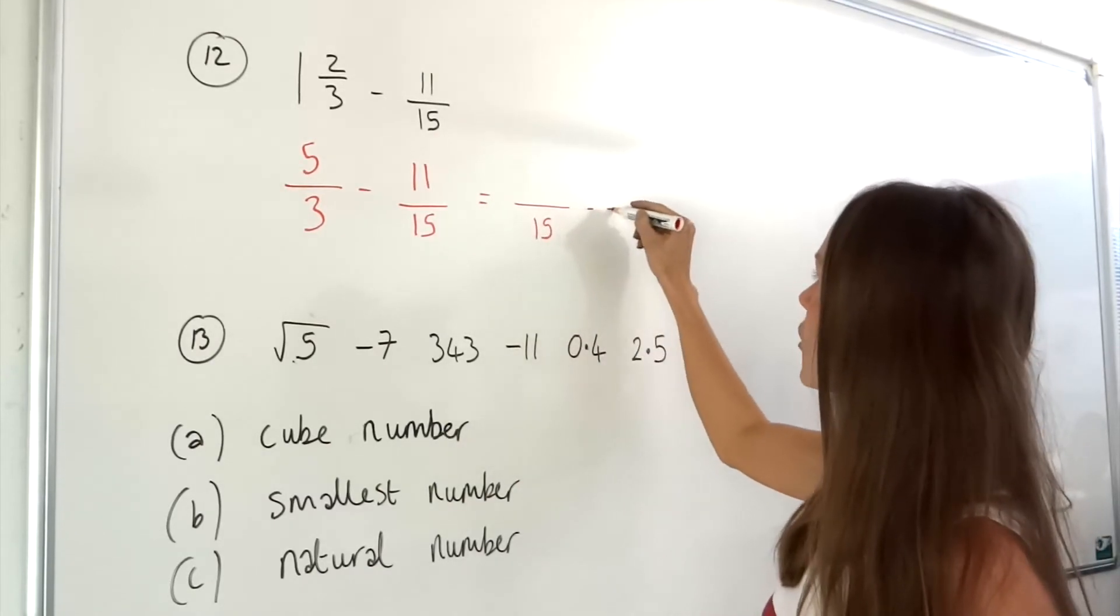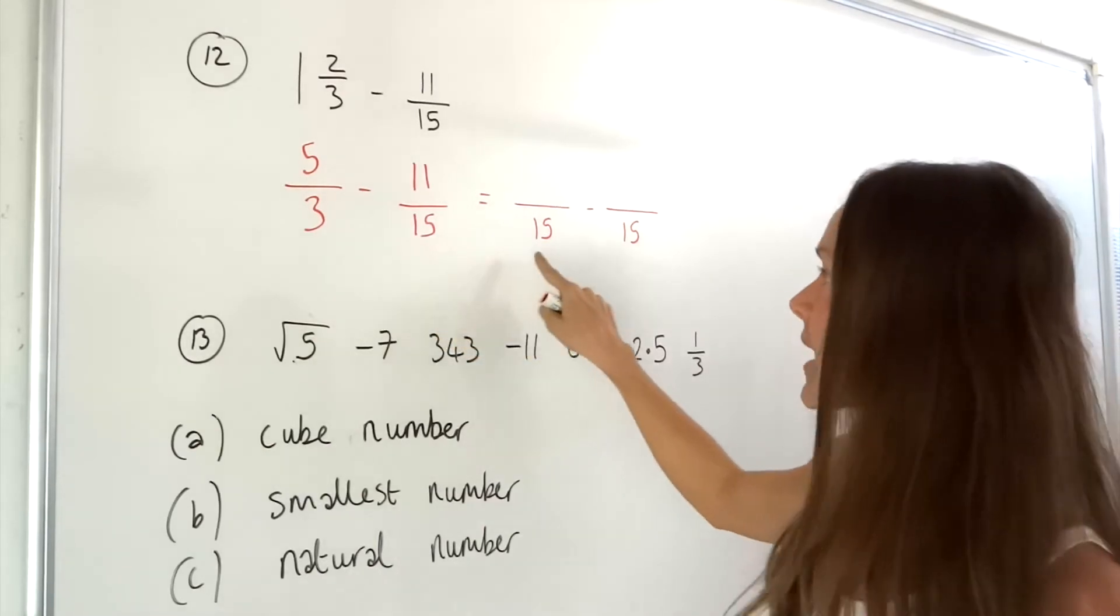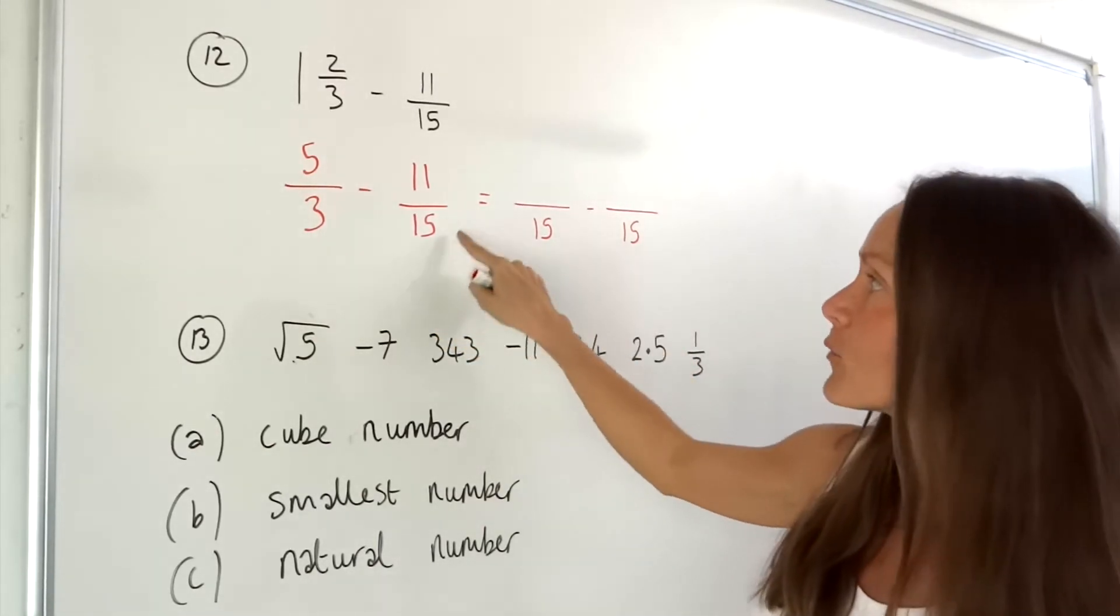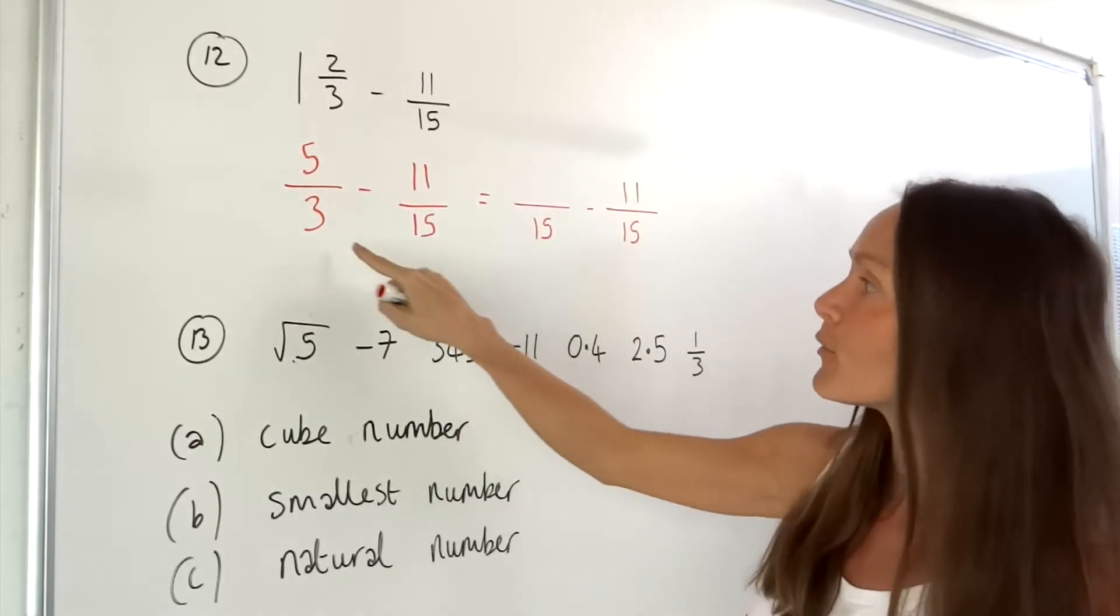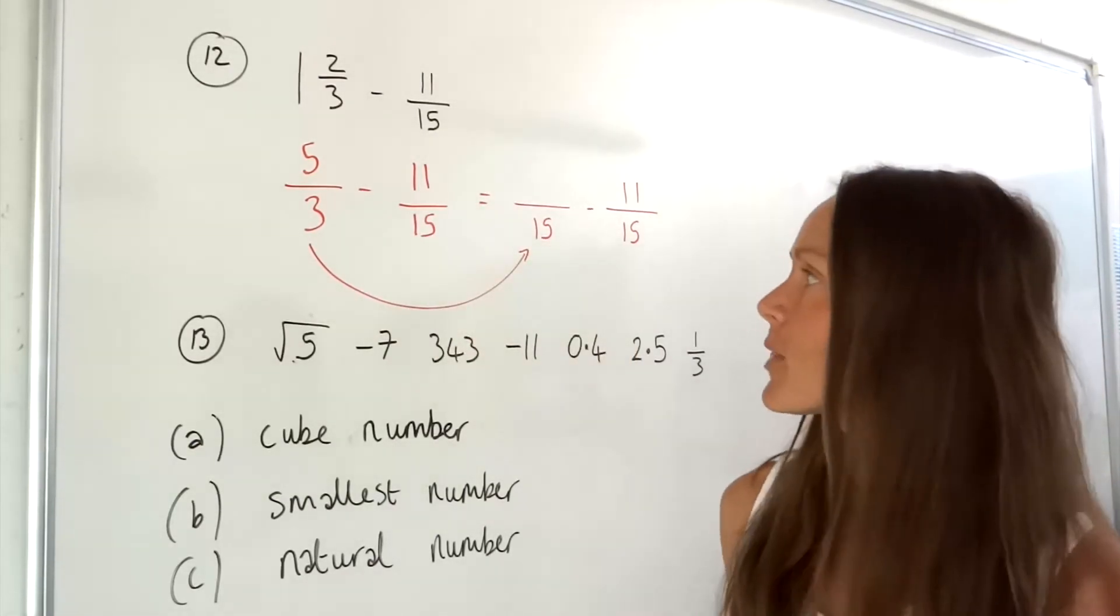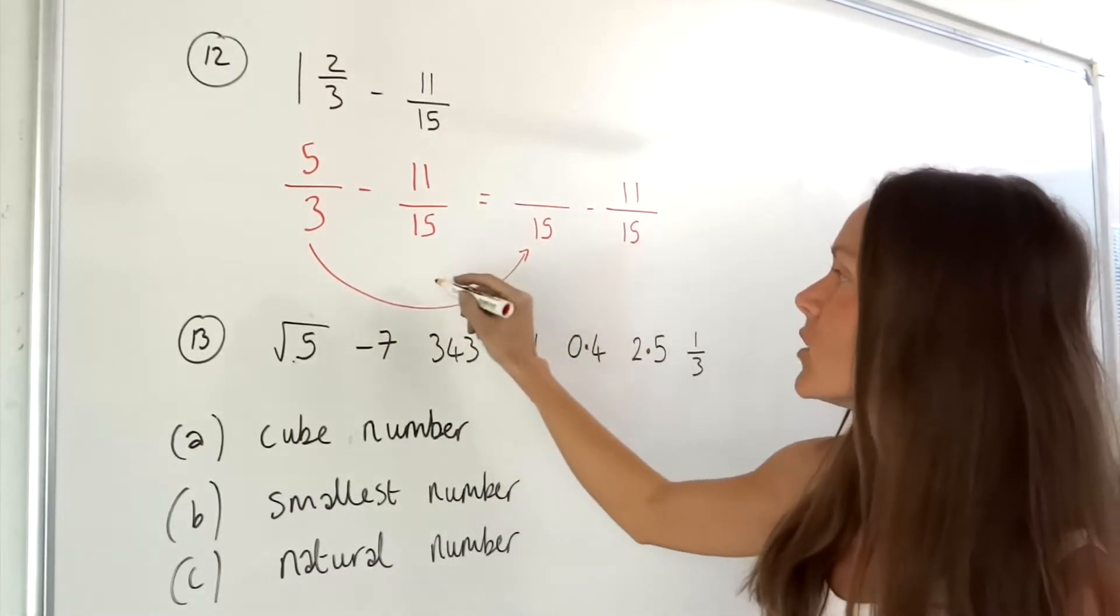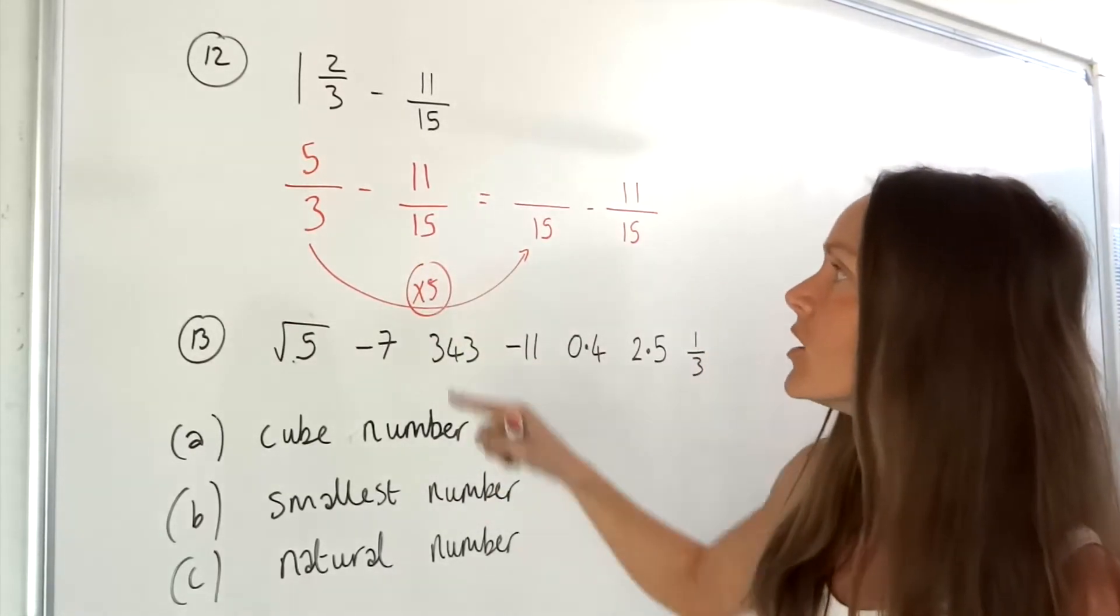We can use a common denominator of 15 because both of those numbers fit exactly into the number 15. The second fraction hasn't changed, it's still 11 fifteenths, but the first fraction has changed. To get from the number 3 to the number 15 we are multiplying by the number 5.